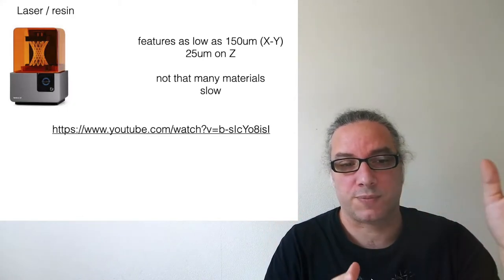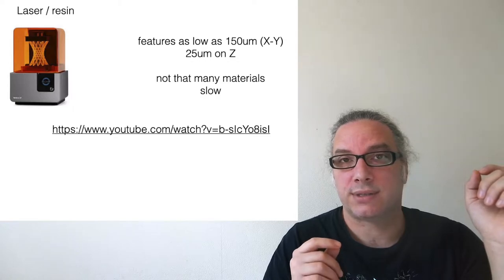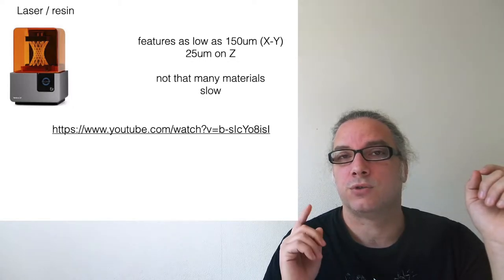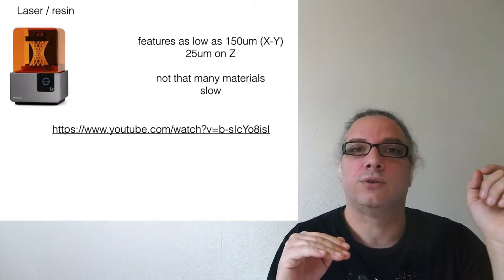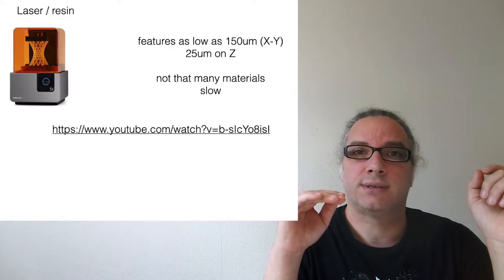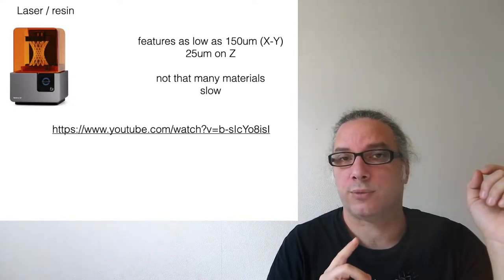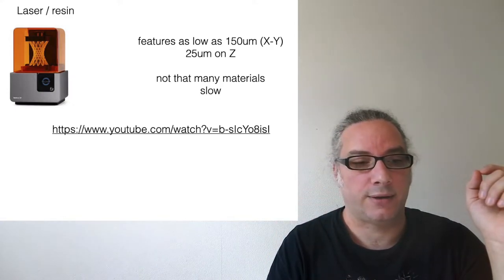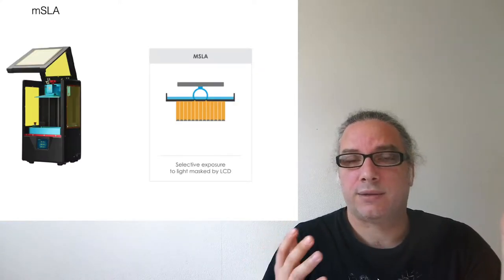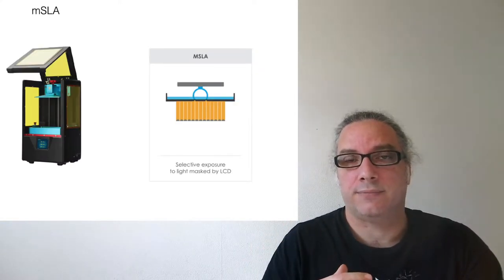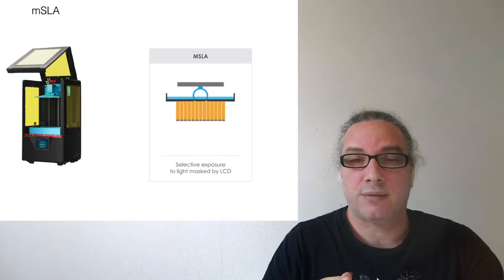Those are the minimum features you can get from these printers. The point is that SLA is extremely slow, because you have to move the laser for photopolymerizing, then raise the stage a little bit, bring it back, and then photopolymerize again layer by layer.